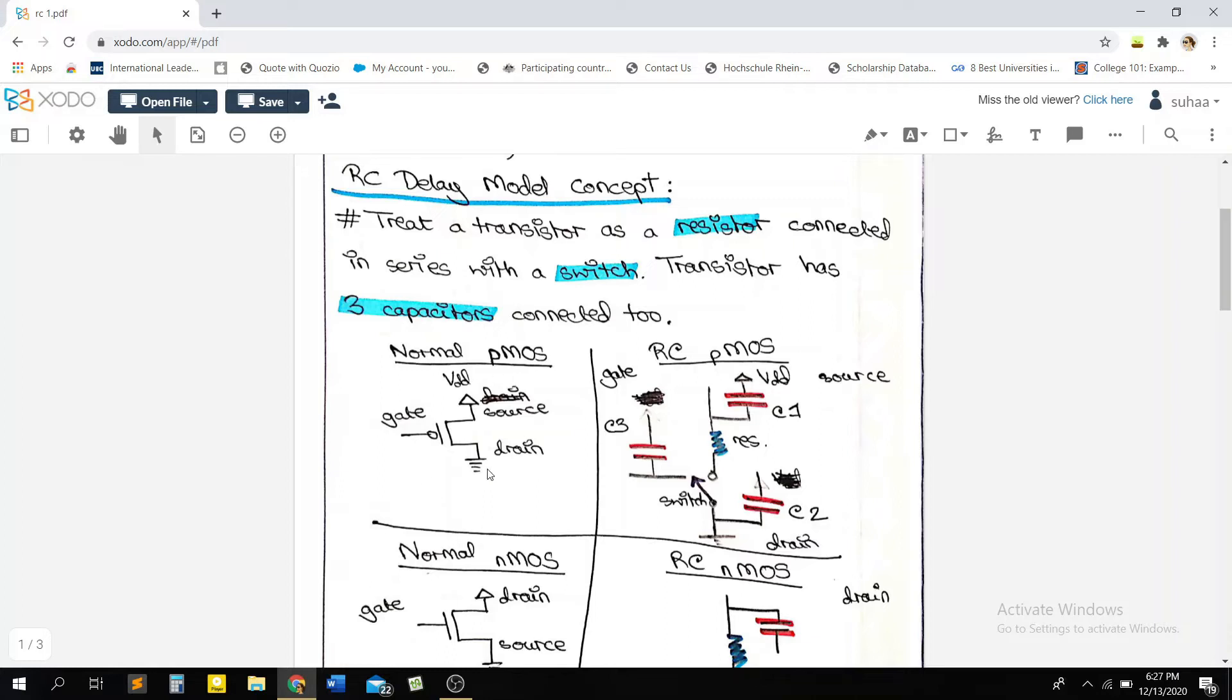So here we have our common PMOS. The PMOS is connected to the power source here, VDD. So this is the source of the PMOS. This part is the source of our PMOS. This is the drain, which is connected to ground. And this is the gate of our PMOS.